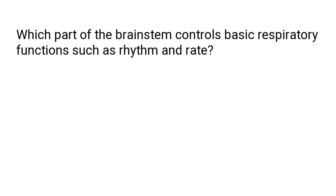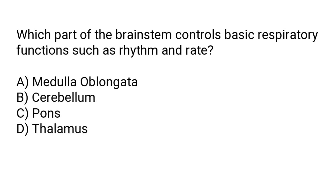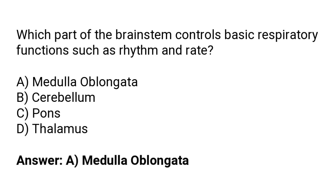Which part of the brain stem controls basic respiratory functions such as rhythm and rate? The options are: medulla oblongata, cerebellum, pons, thalamus. The correct answer is option A — the medulla oblongata is the part of the brain stem which controls basic respiratory functions such as rhythm and rate.